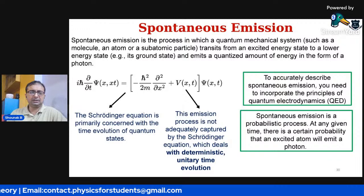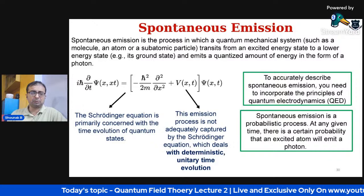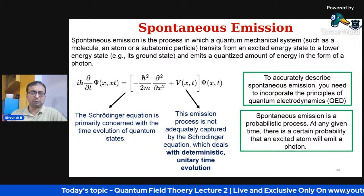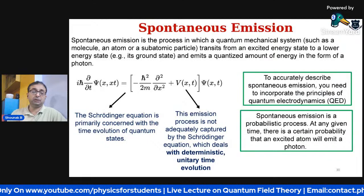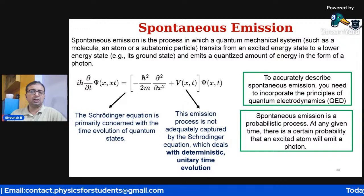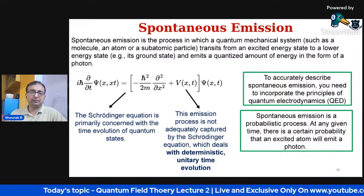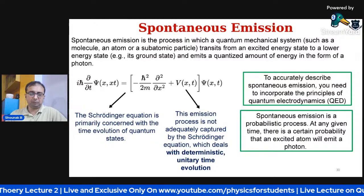Schrödinger's equation is primarily concerned with the time evolution of quantum states. This emission process is not adequately captured by the Schrödinger equation, which deals with deterministic unitary time evolution. To accurately describe spontaneous emission, you need to incorporate the principles of quantum electrodynamics, which is another part of quantum field theory. Spontaneous emission is a probabilistic process — at any given point in time there is a certain probability that an excited atom will emit a photon.